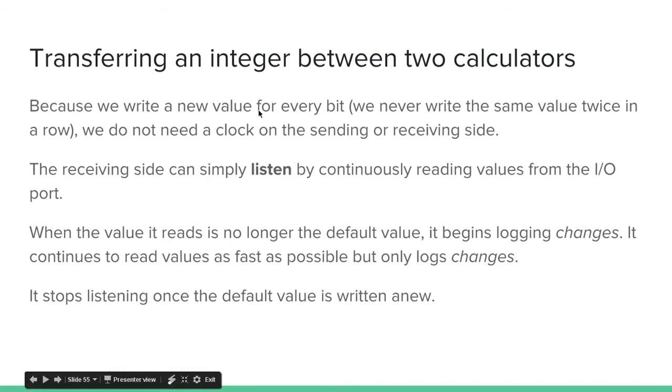Because we write a new value for every bit, we never write the same value twice in a row, we do not need a clock on the sending or receiving side. The receiving side can simply listen by continuously reading values from the I/O port. When the value it reads is no longer the default value, it begins logging changes. It continues to read values as fast as possible, it only logs changes. It stops listening once the default value is written anew.